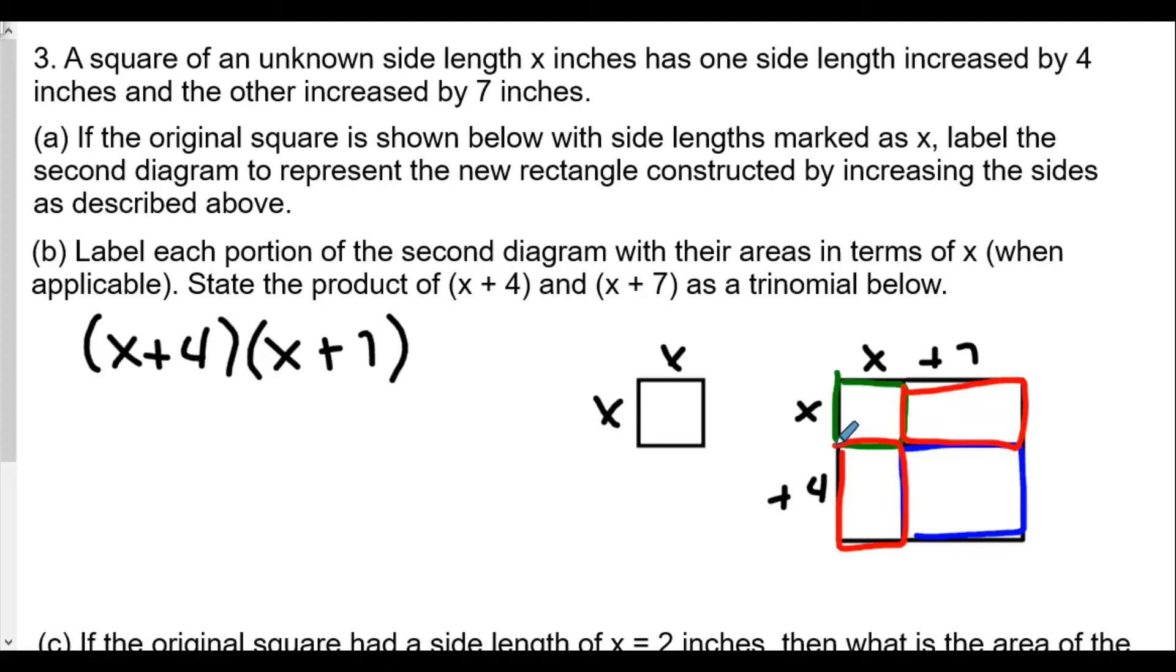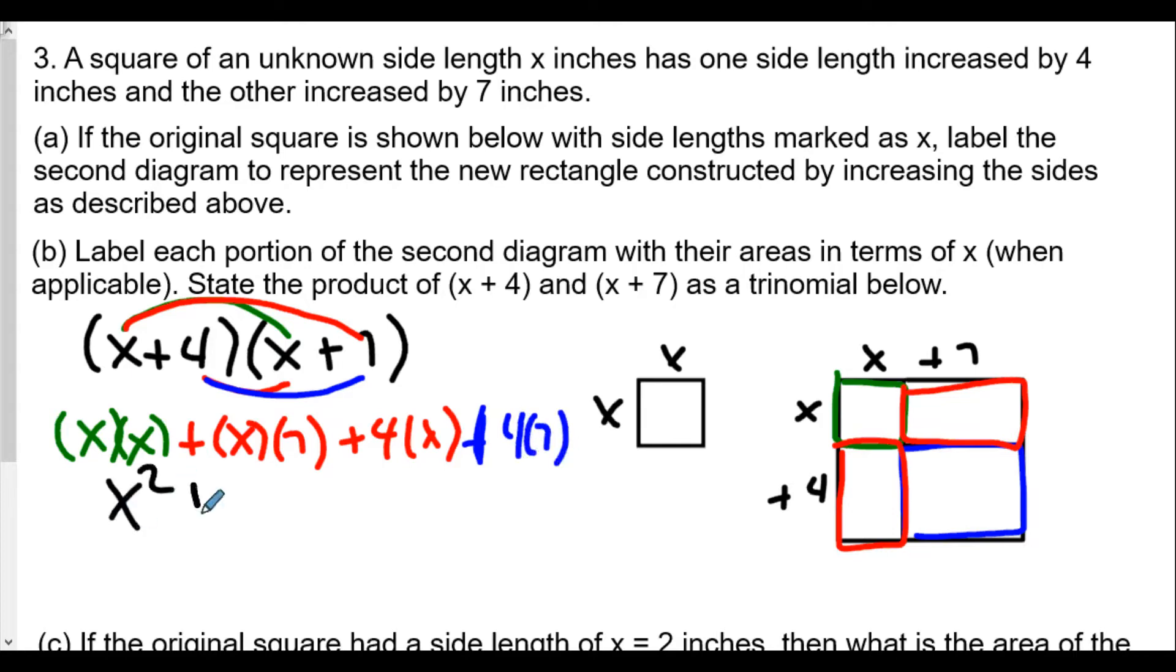So it says here, label each of the second diagram with the areas in terms of x when applicable, okay, and state the product of x plus 4 and x plus 7 as a trinomial as well below. So we want to find the product, and so the product we'll do, we'll use in this case the distributive method, so we'll do that first. We'll do x times x, so x times x will be x squared, then we'll do, in this case, x times 7, so x times 7, and then we'll do 4 times x, and then we'll do 4 times 7,